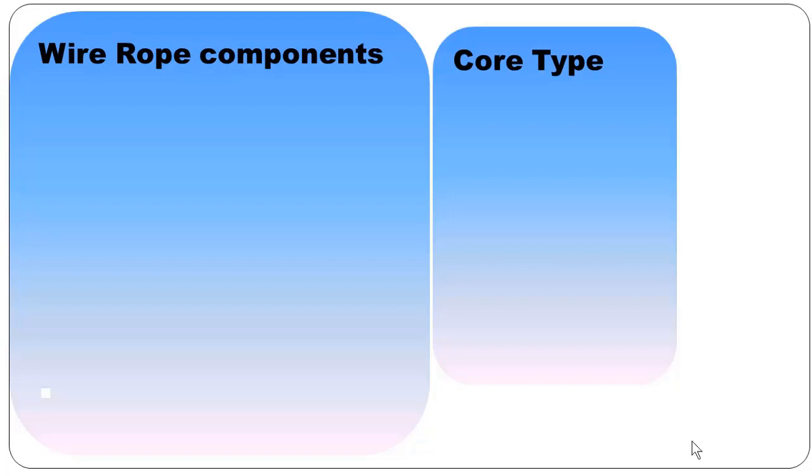Wire rope components: there are four wire rope components. The first one is wire. A wire is the smallest building unit of a wire rope. The second component is called strand. The various number of wires when combined together in various ways give shape of a strand.